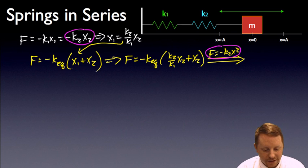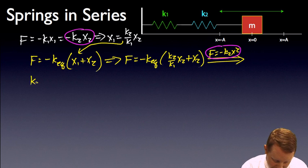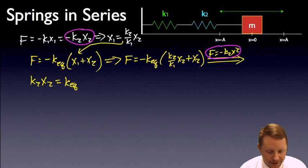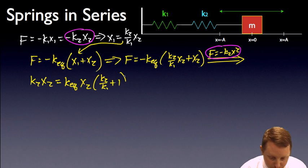f equals minus k2 x2, we can take this simplification a little bit further to say that k2 x2, just replacing f with minus k2 x2, and get rid of our negative signs at the same time, must be equal to our equivalent k, pull out the x2, and I'm left with k2 over k1 plus 1.